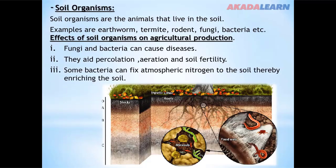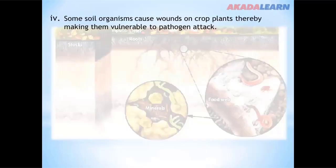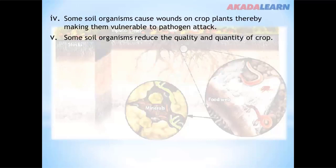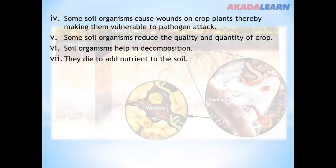Some bacteria can fix atmospheric nitrogen into the soil, thereby enriching it. Some soil organisms cause wounds on crop plants, making them vulnerable to pathogen attack. Some soil organisms reduce the quality and quantity of crops. Soil organisms also help in decomposition and add nutrients to the soil.